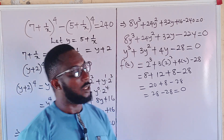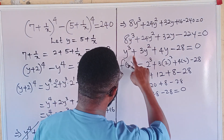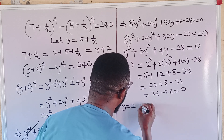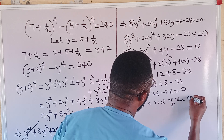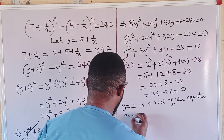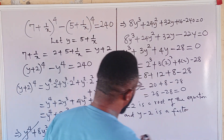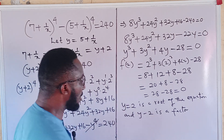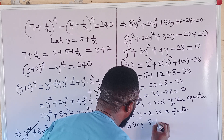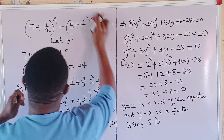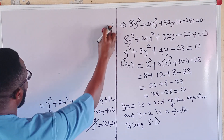Indeed, y = 2 is a root of this equation. So we can say y = 2 is a root of the equation, and therefore (y minus 2) is a factor. We shall now perform synthetic division, which is much simpler, to find the remaining factor.